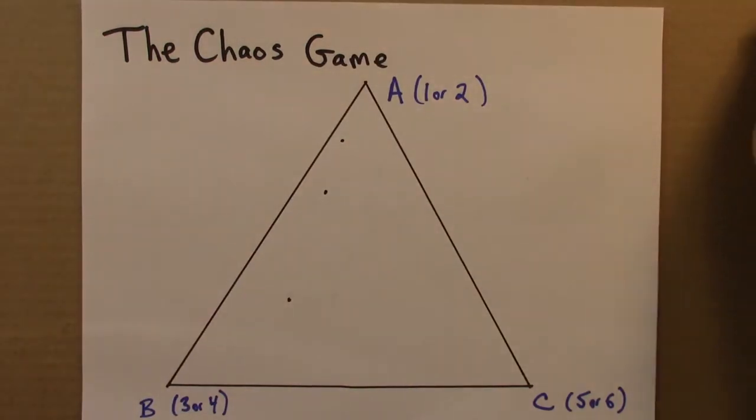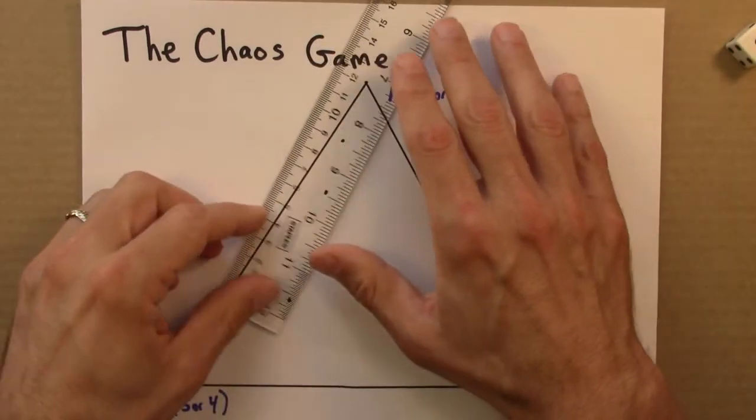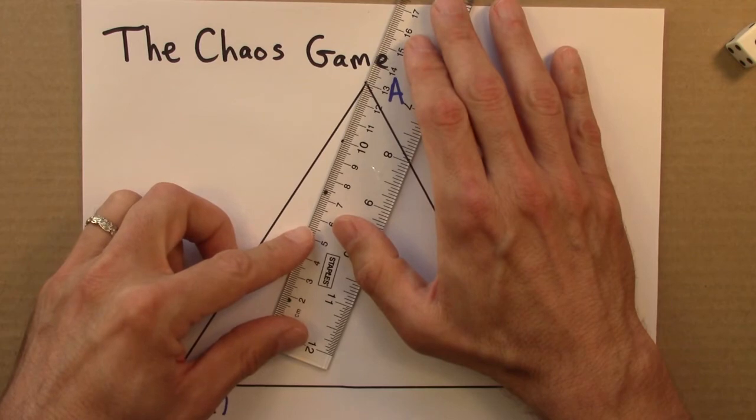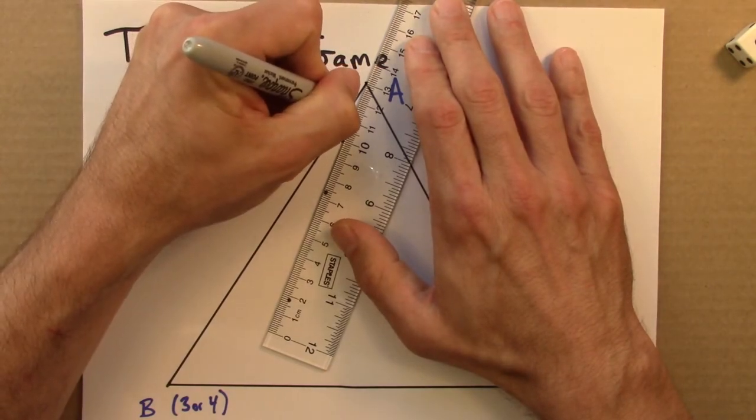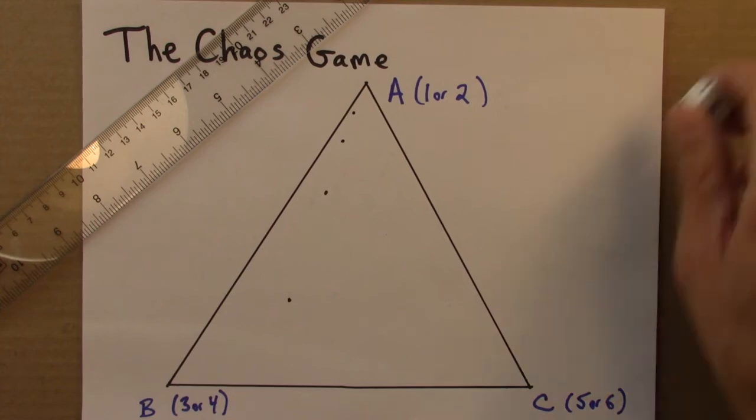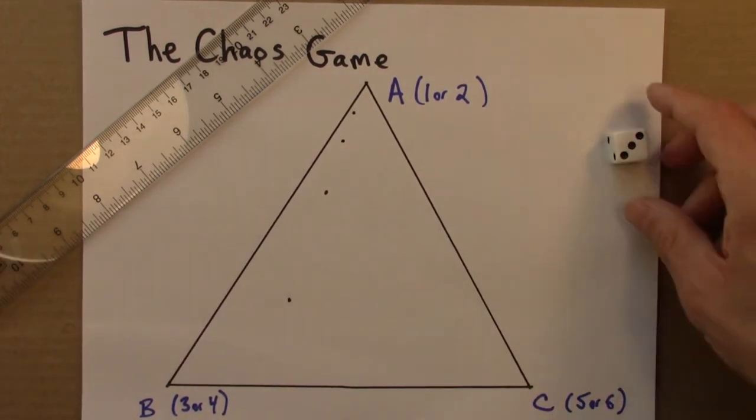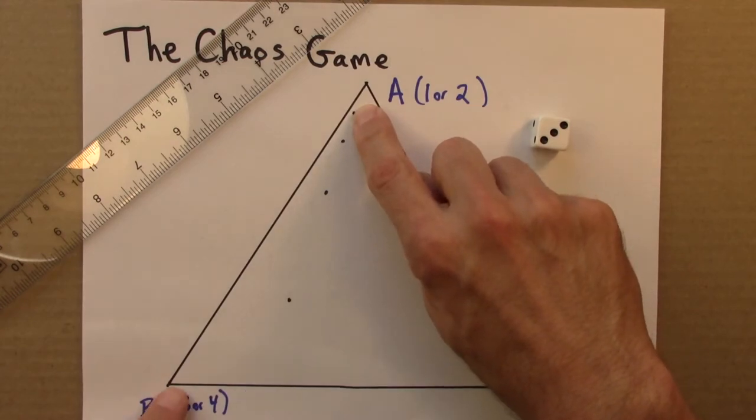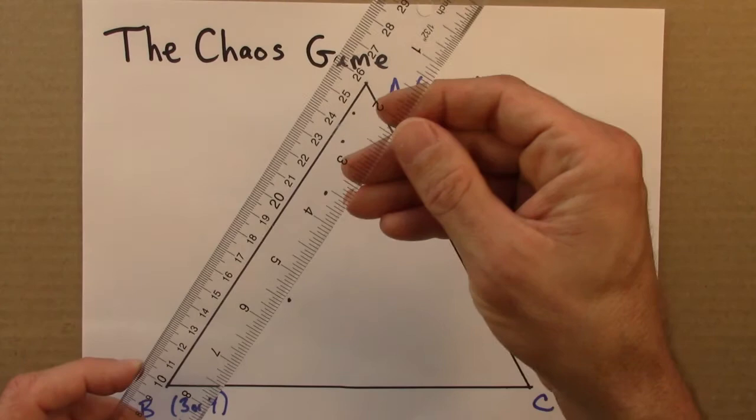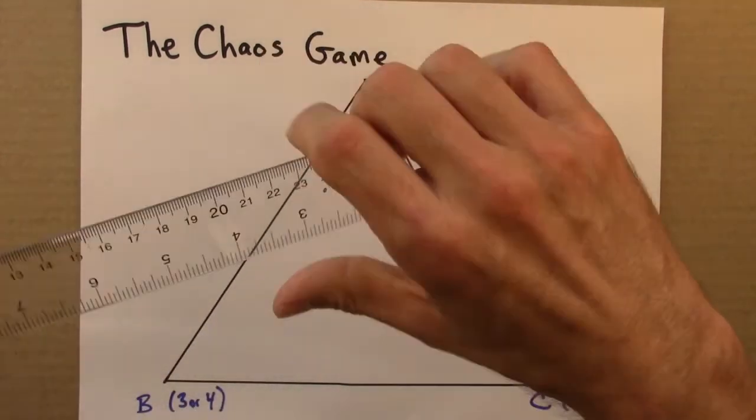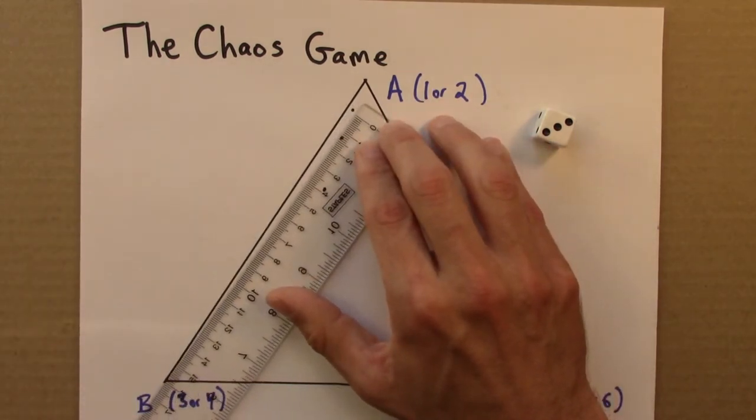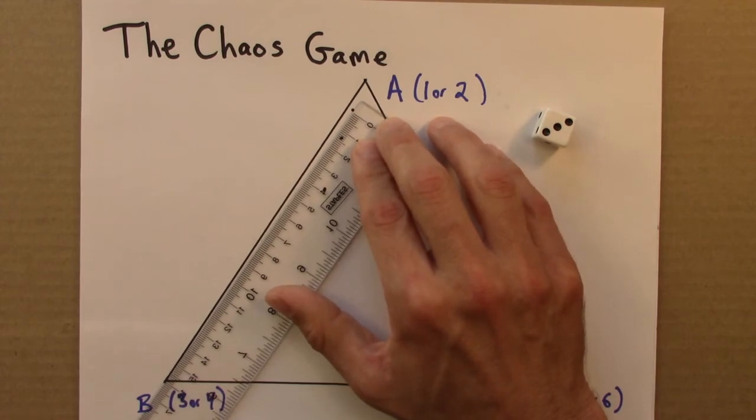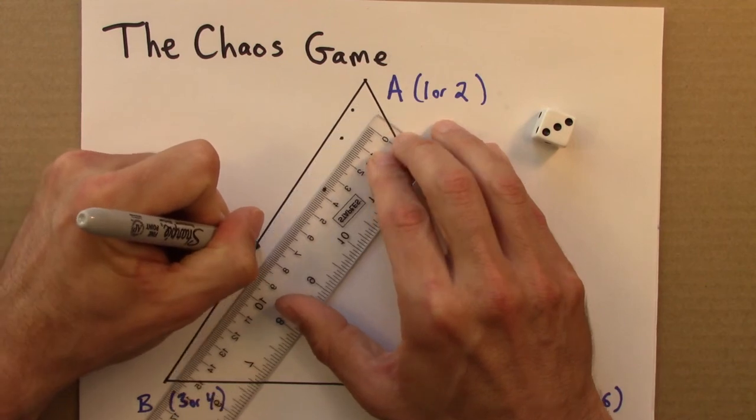And we'll keep going. Let's do at least one more. Hopefully I'll get a not one or two. One again. Alright. Fine. I'm going to go halfway to A, the top corner. Let's do one more. Alright, a 3. So now I'm going to go from here to here, but I'm only going to go halfway. So let's see here. Zero. Looks like that's about 16. I'm going to go a distance of 8. There I am.